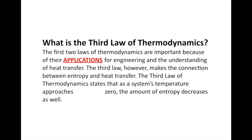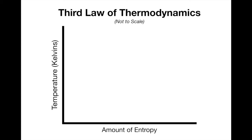The third law of thermodynamics makes the connection between entropy and heat transfer. The first two laws tell us the total energy stays the same during a transfer but you lose useful energy in the work-energy relationship. The third law states that as the temperature of the system approaches absolute zero, the amount of entropy will decrease as well. Looking at this graph — the y-axis is temperature in Kelvin and the x-axis is the amount of entropy — as temperature drops toward zero Kelvin, entropy is reduced as well.